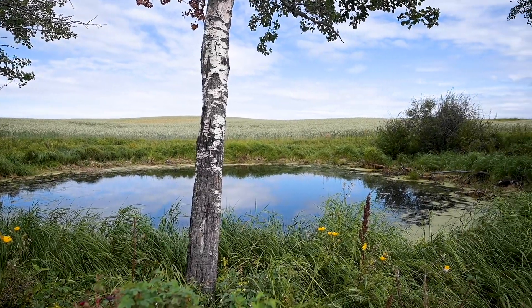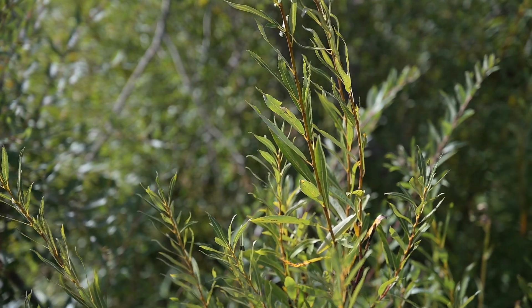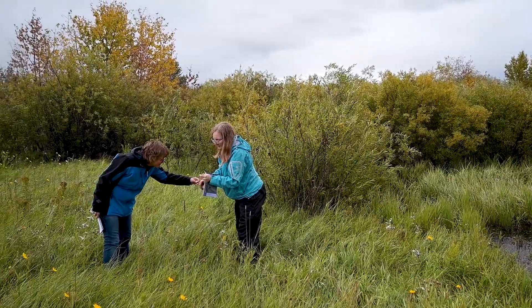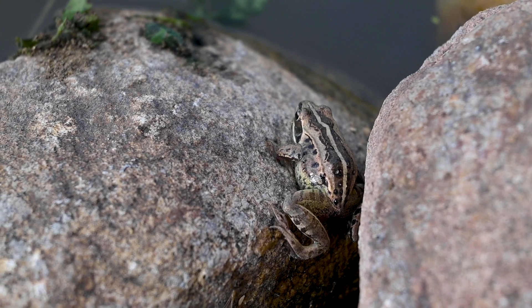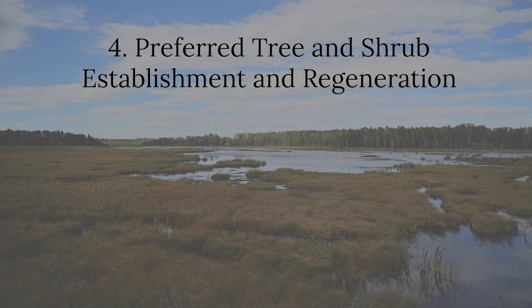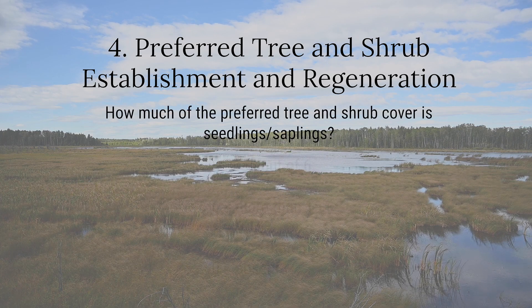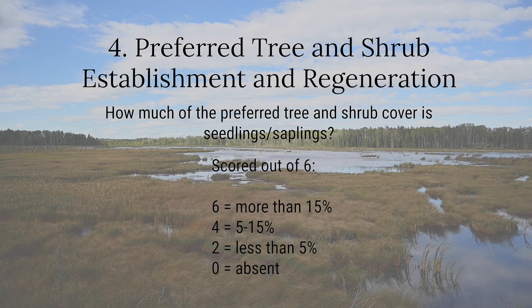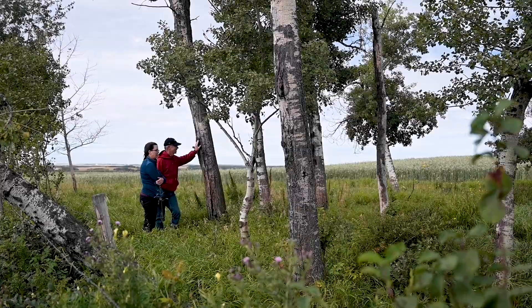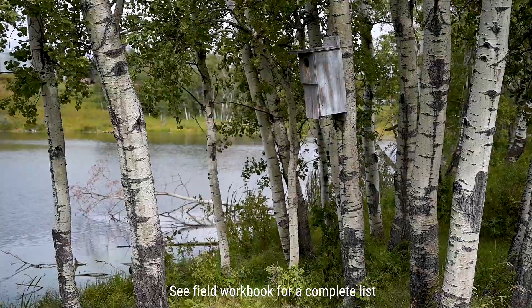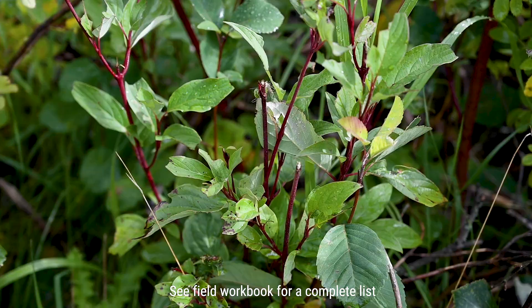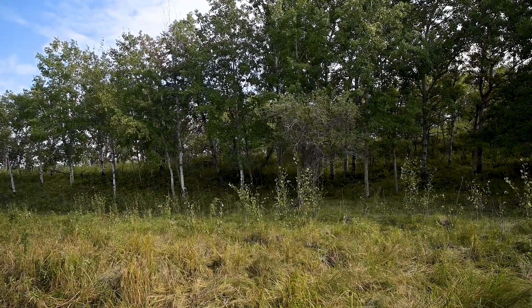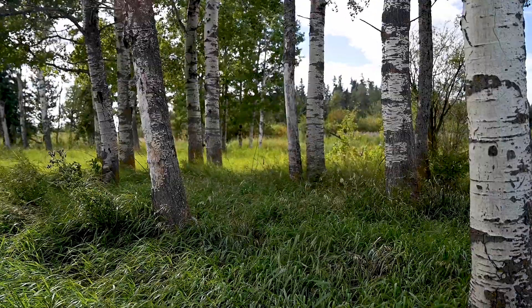The next indicators we assess focus on the tree and shrub community. A self-sustaining riparian forest or shrubland is integral to soil stabilization, nutrient and moisture cycling, and fish and wildlife habitat in most riparian sites. One of the things we look for is if preferred trees and shrubs like poplars, willows, or red osier dogwood are present and regenerating. Do we see enough seedlings or saplings to replace the older plants, or are there mostly only mature, aging plants?